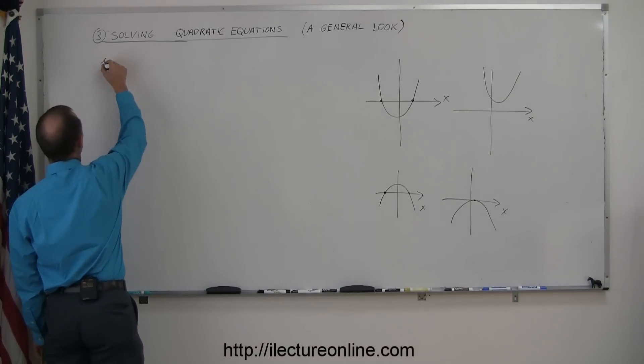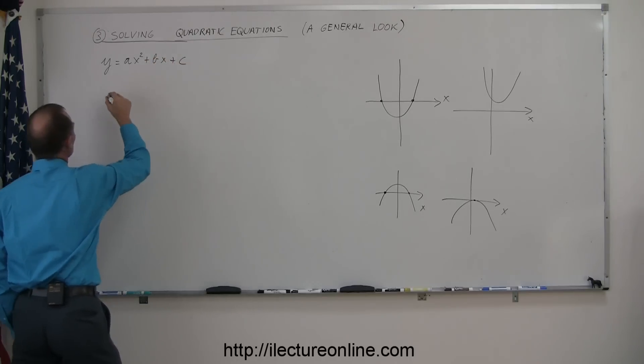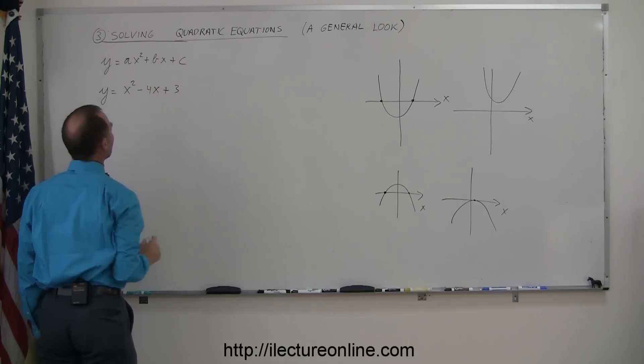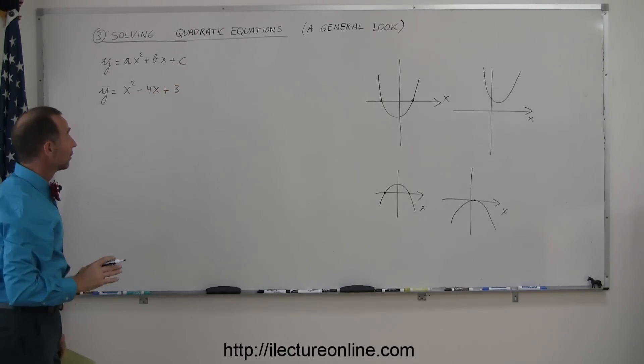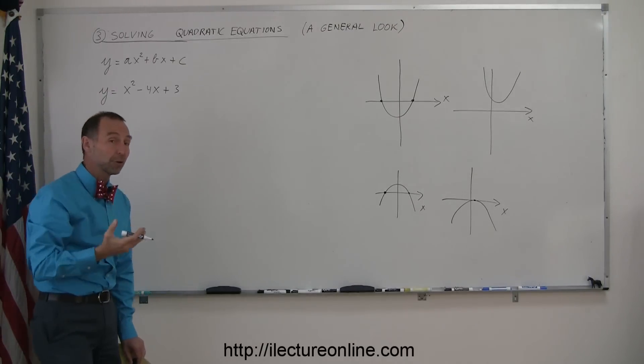So again, let's write the general form: y equals ax squared plus bx plus c. Let me show you this example. y is equal to x squared, let's say, minus 4x plus 3. So the question may be, well first of all, if you were to graph it, what would it look like? Does it open upward? Does it open downward?